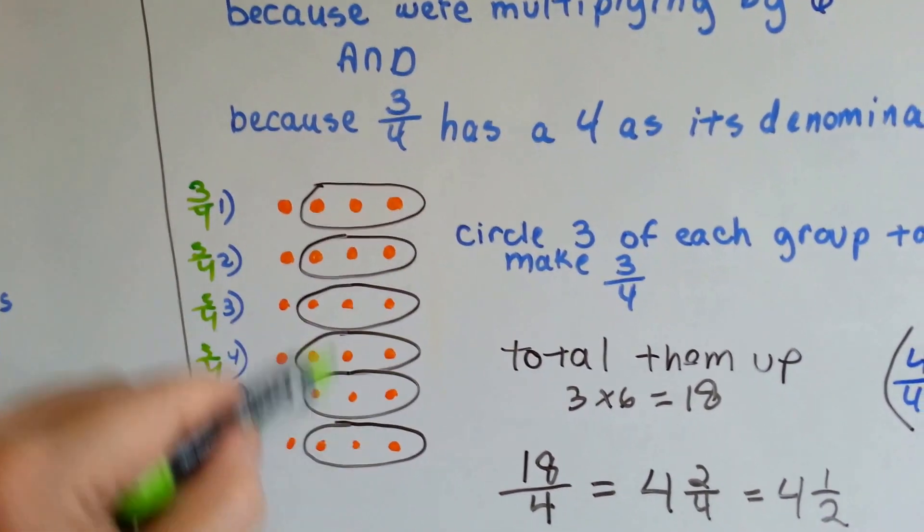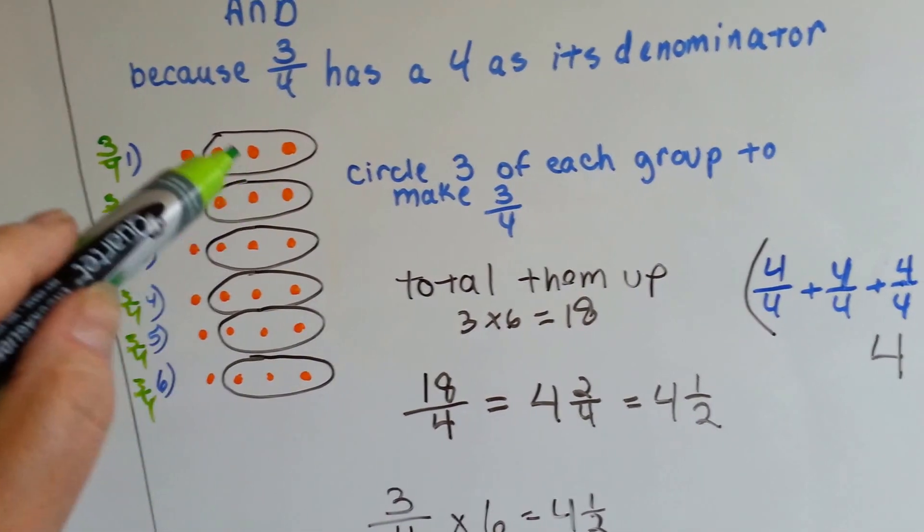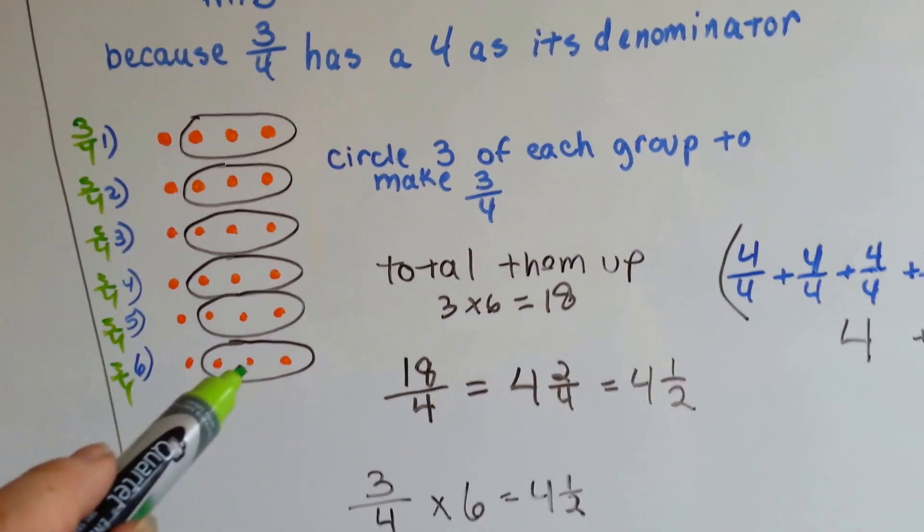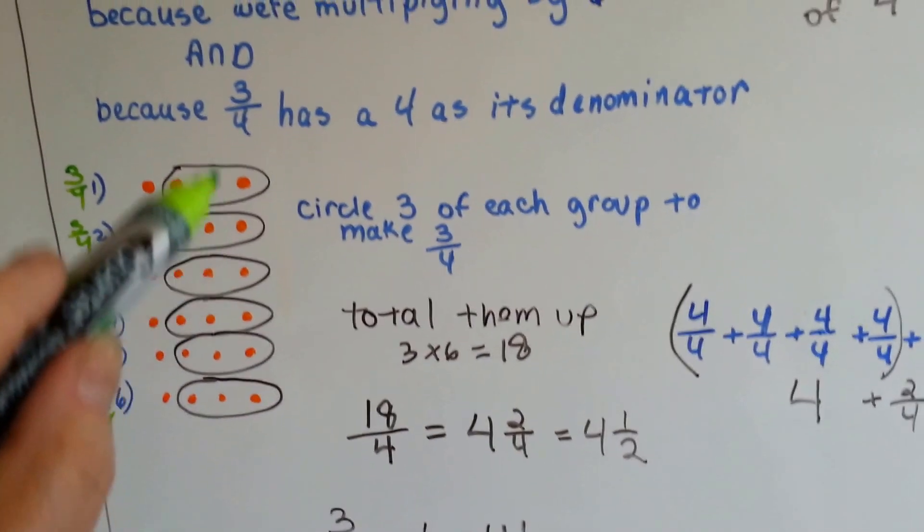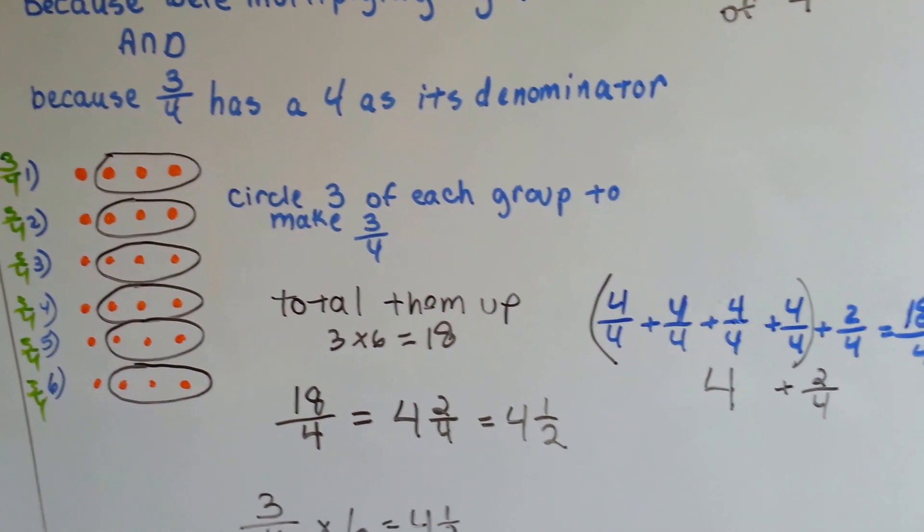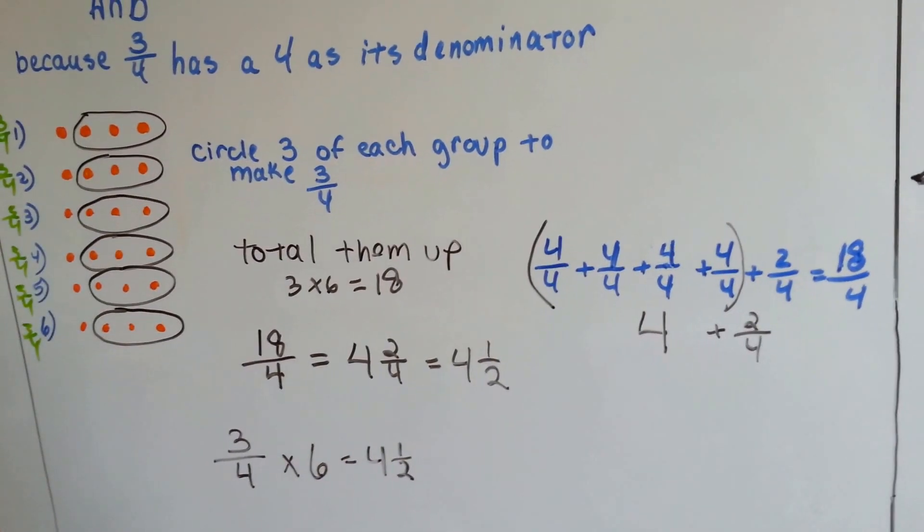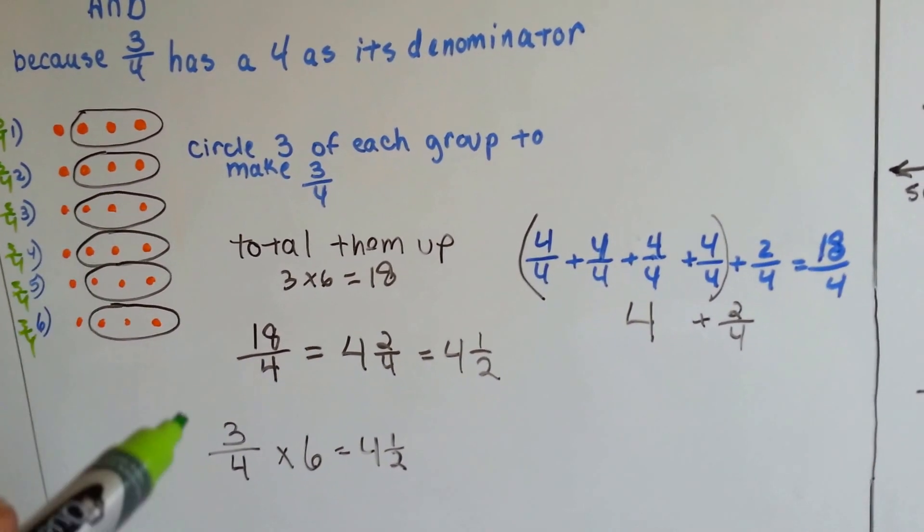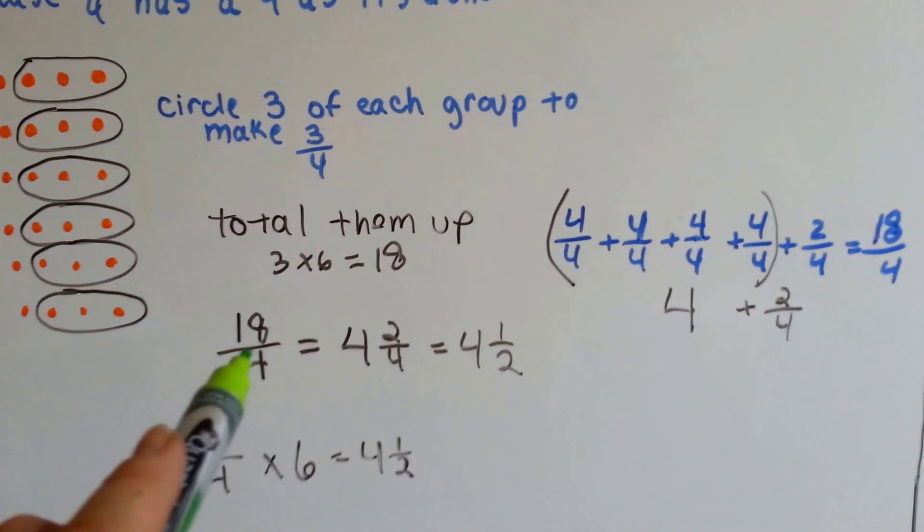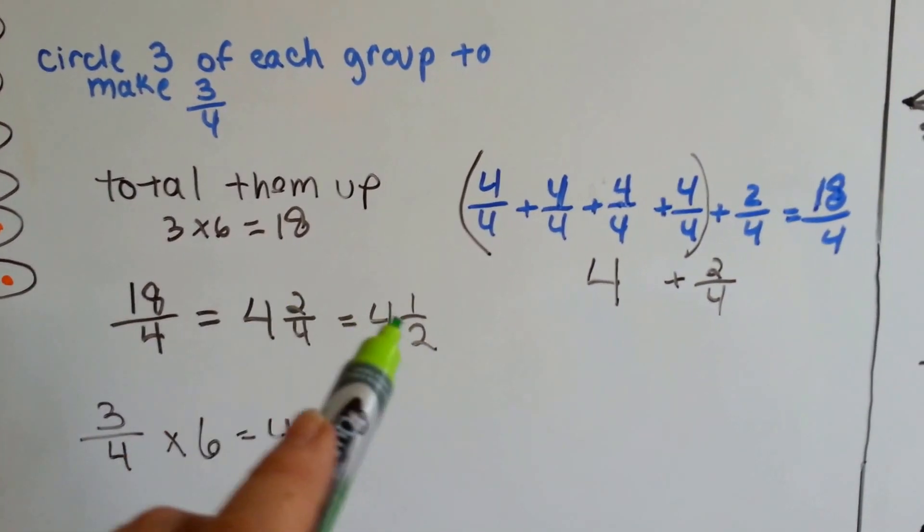Now I can add the dots that are within the circle and I get 18. So I know that 18 of these dots is going to be over a 4 denominator. Because I have 18 fourths. Three-fourths and three-fourths and three-fourths 6 times is going to make 18 fourths. So now we've got 18 fourths, but it's an improper fraction. We need to turn it into a regular number.